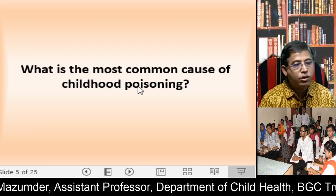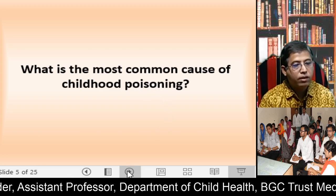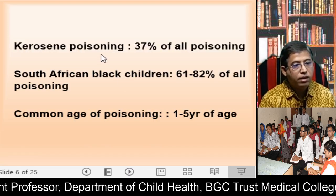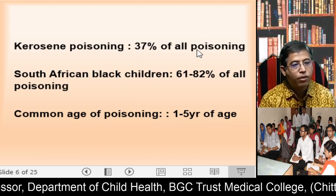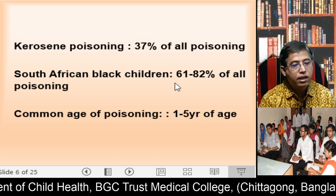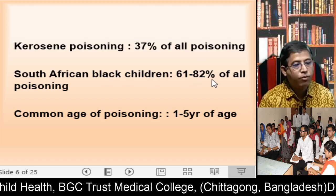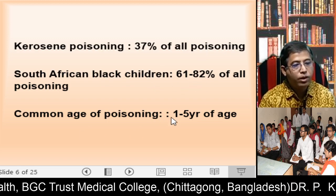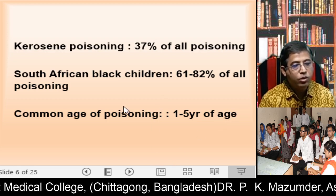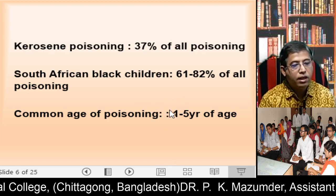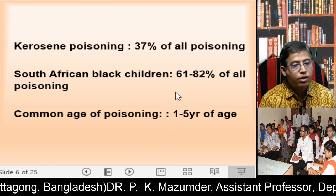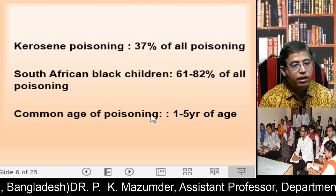What is the most common cause of childhood poisoning? It is kerosene poisoning. Kerosene poisoning accounts for 37% of all poisoning cases, and in South African children it is 61 to 82% of all poisoning. The common age of poisoning is 1 to 5 years of age.